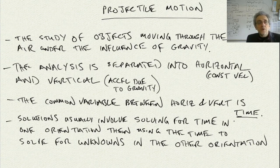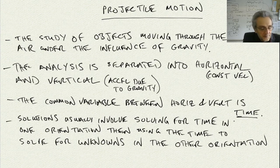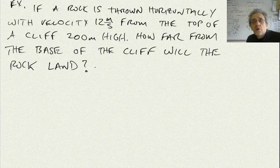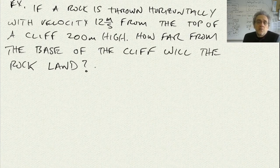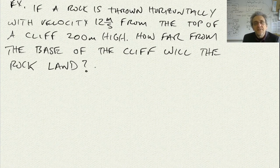Let's go ahead and start with an example problem, and then all these notes will probably make more sense. Here's our question: if a rock is thrown horizontally with a velocity of 12 meters per second from the top of a cliff 200 meters high, how far from the base of the cliff will the rock land?